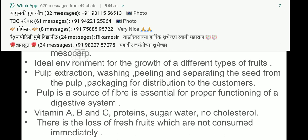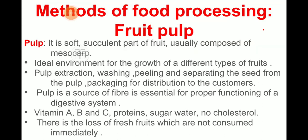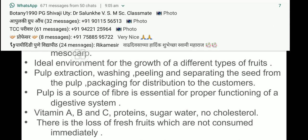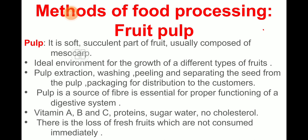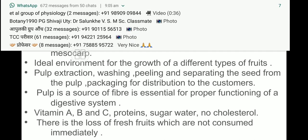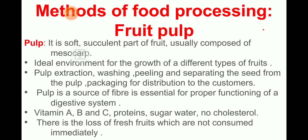There is a really ideal environment for the growth of different varieties of fruits in India, and that is an opportunity we have to use. Pulp extraction involves washing, peeling, and separating the seeds from the pulp, then packaging for distribution to customers.